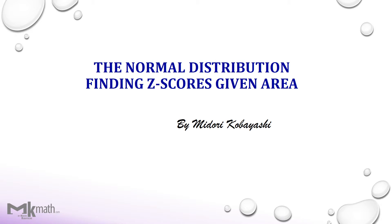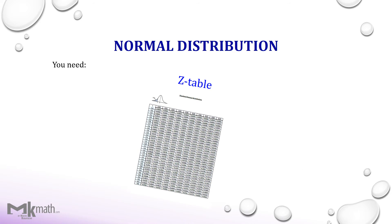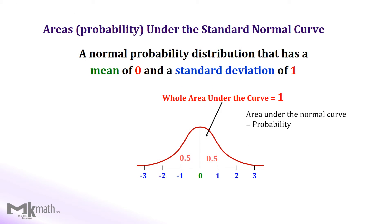In this video, I'd like to show how to find z-scores given areas. You need a cumulative z-table. We need a basic knowledge about the standard normal distribution. It has a mean of 0 and a standard deviation of 1. Please keep in mind that the area under the curve is probability.